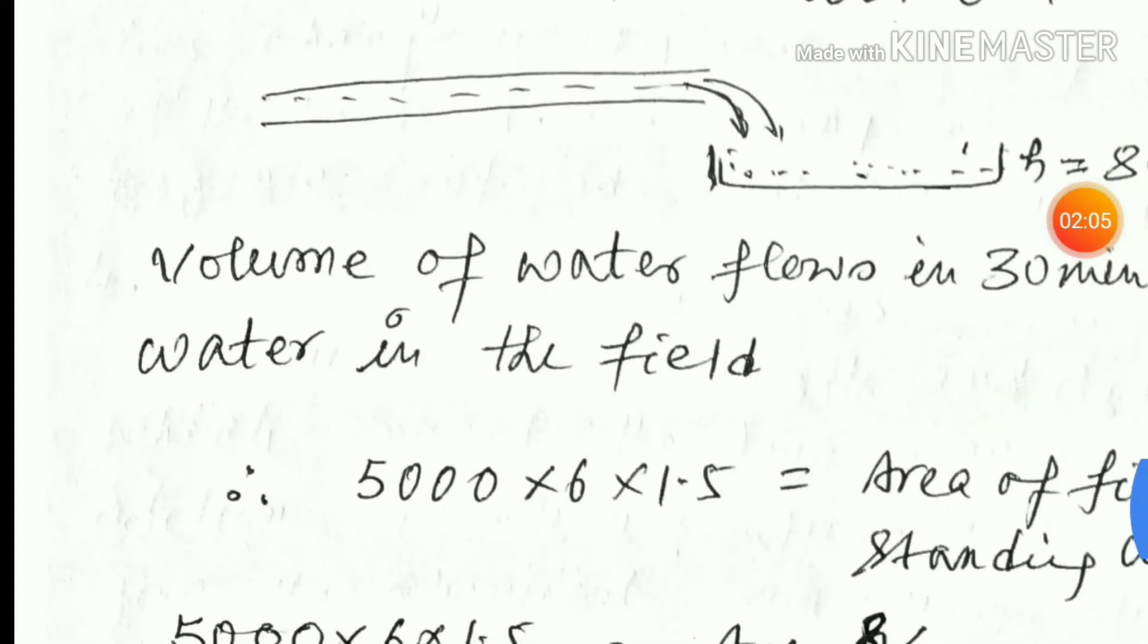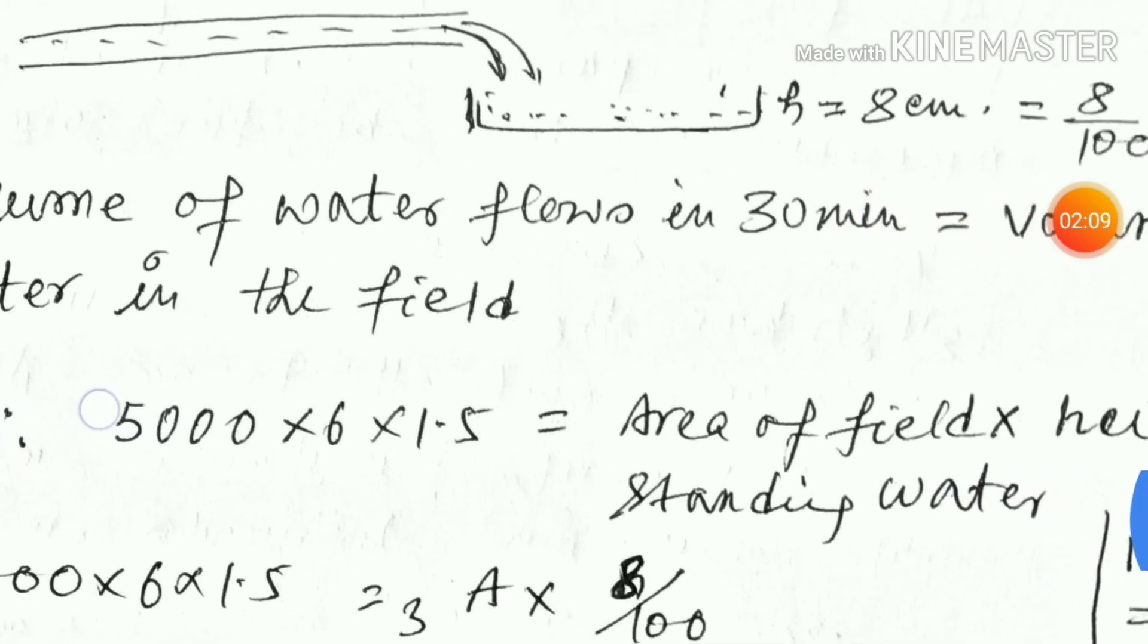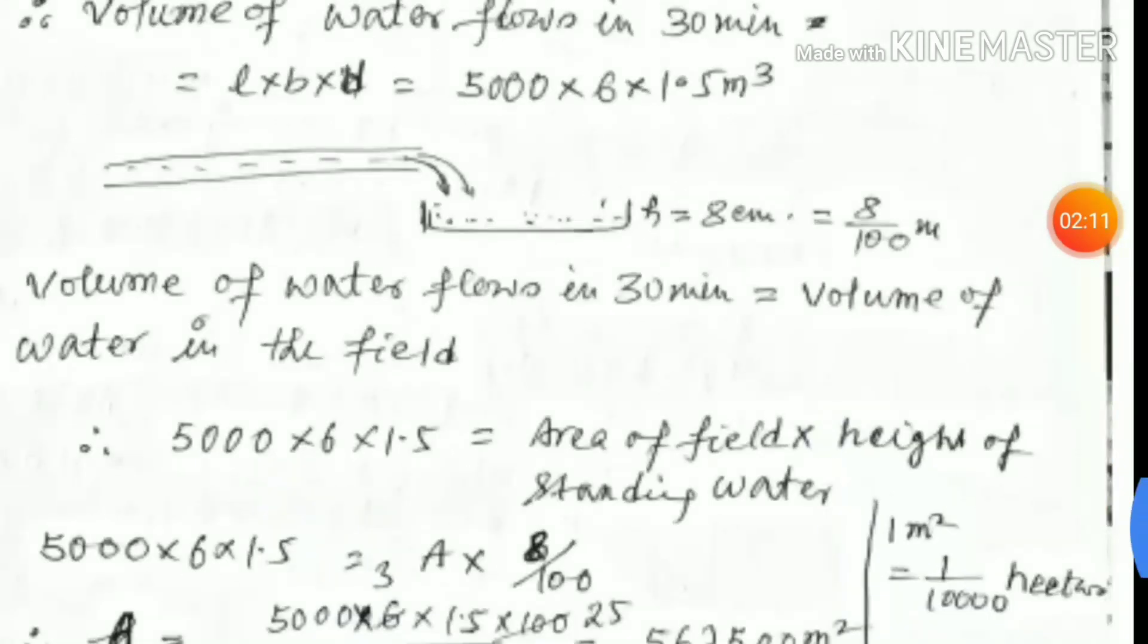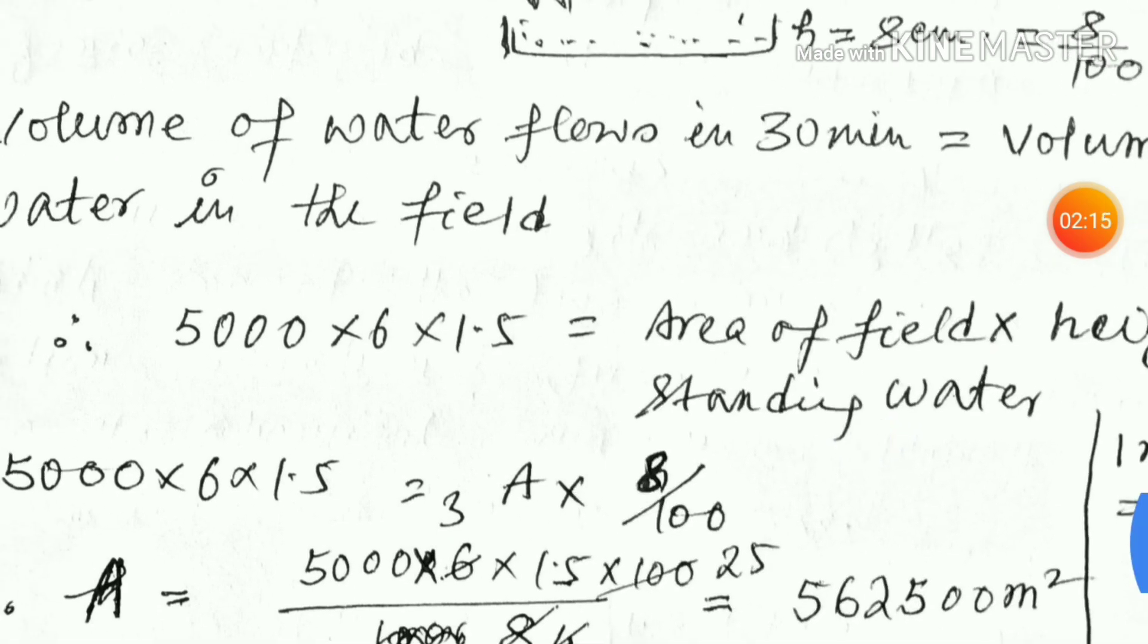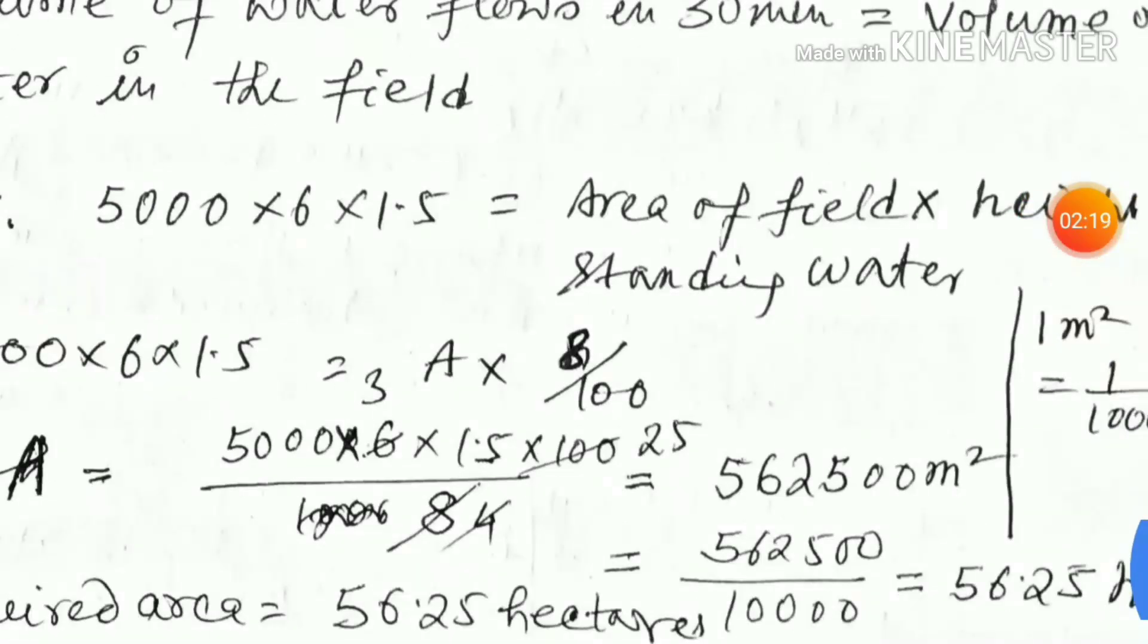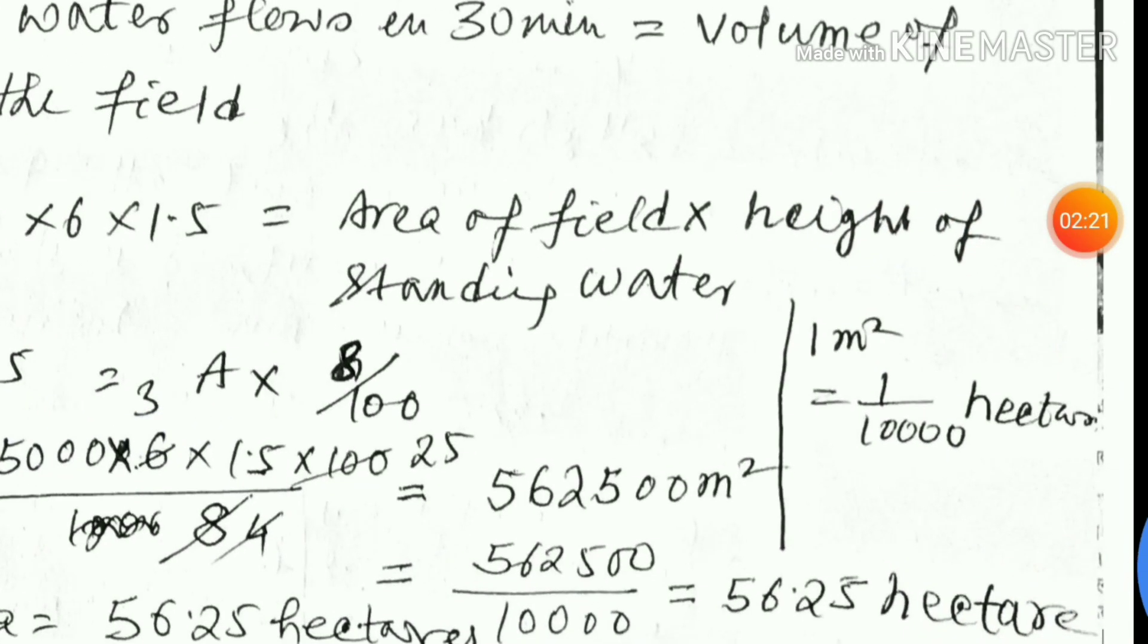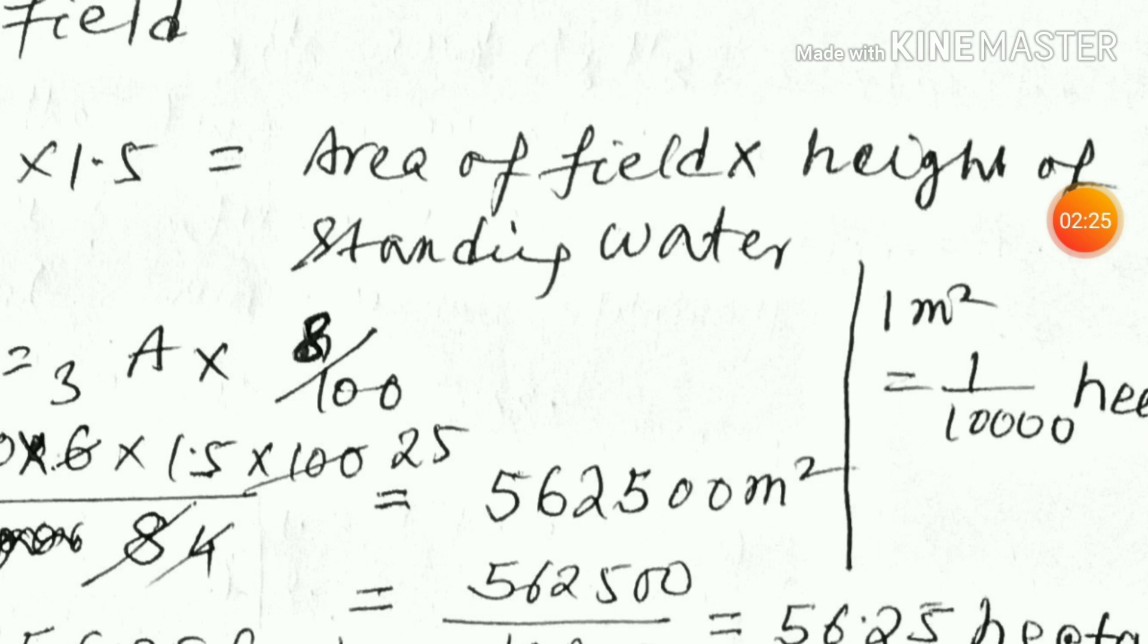Volume of water flows in 30 minutes equals the volume of water in the field. What is length into breadth into height? 5000 x 6 x 1.5. The area of field times the height of standing water, which is 8 upon 100.